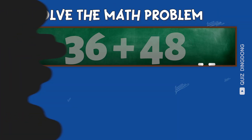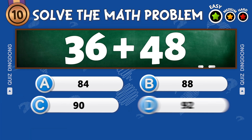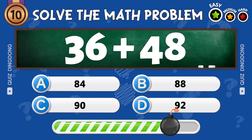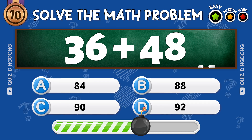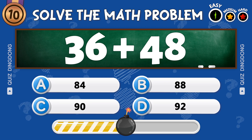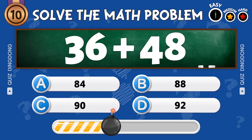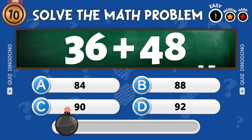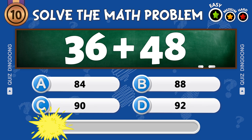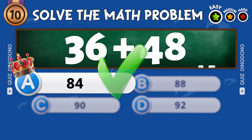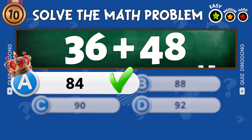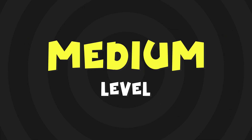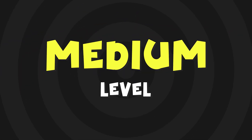Last one for the easy level. What's 36 plus 48? That's 84! Nice job! Great job! That wraps up the easy level.